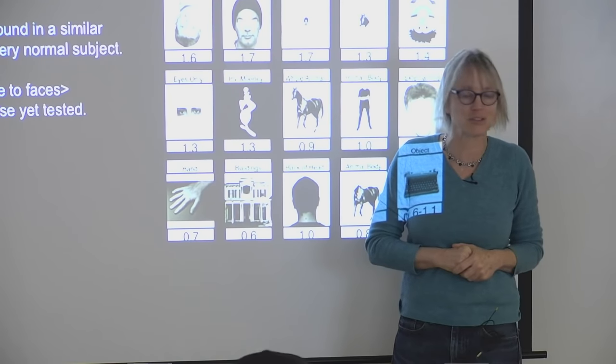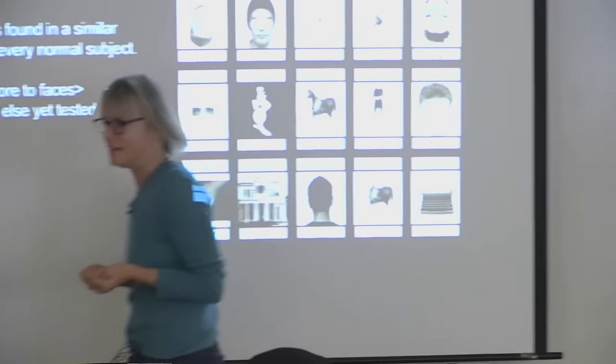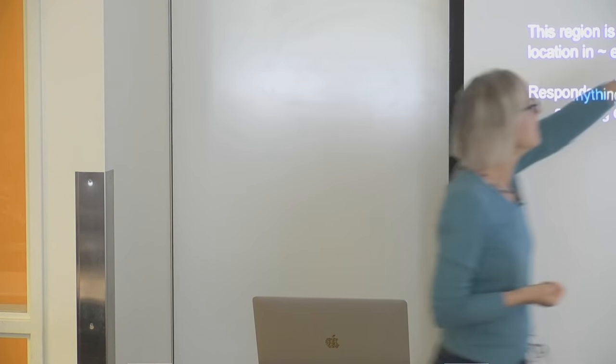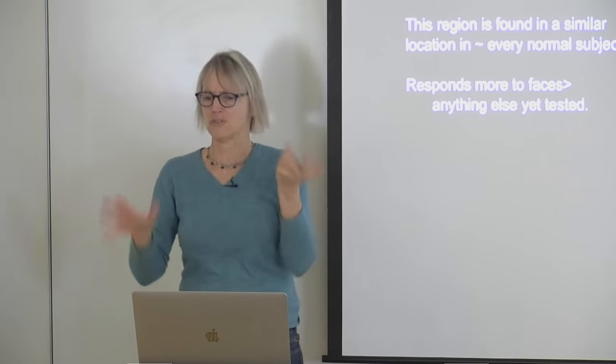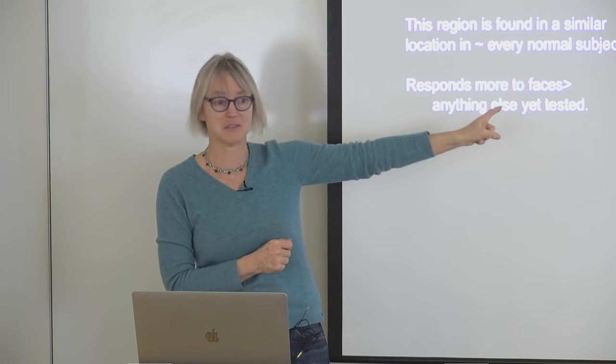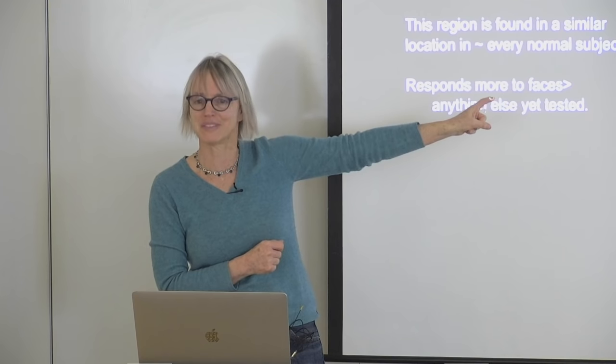The response of the fusiform face area is much stronger to the upright version when you see the face than to the inverted version when you don't. That enables us to stifle a whole line of attack from hardcore vision people who said the face area isn't really selective for faces — it's selective for certain spatial frequencies or contrast. No: same stimulus, just upside down. It makes all the difference. It's really whether you see a face or not.